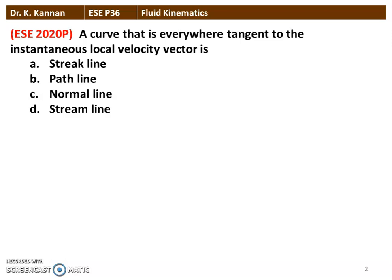The first question from the 2020 question paper: a curve that is everywhere tangent to the instantaneous local velocity vector is — options: streak line, path line, normal line, and stream line. The correct answer is stream line. When everywhere the tangent indicates the local velocity, it is a stream line.